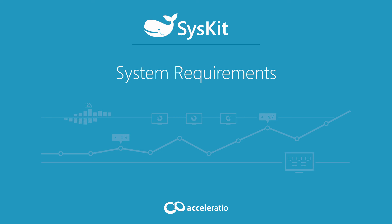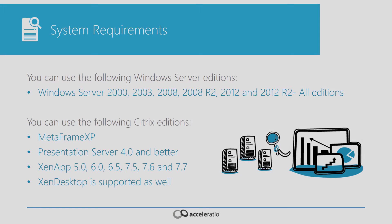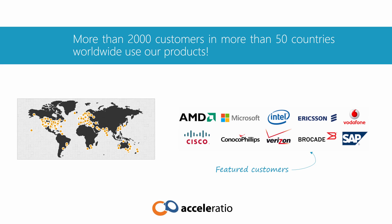SysKit supports all Windows servers, from Windows Server 2000 to Windows Server 2012 R2, and all Citrix XenApp editions from MetaFrame XP to the latest XenApp 7.7. XenDesktop is supported as well. Currently, we have more than 2,000 customers online, ranging from small businesses and single servers to multinational companies with thousands of servers.